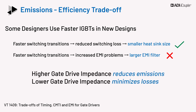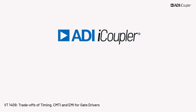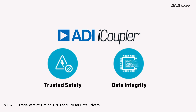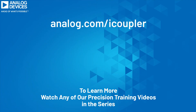Using higher gate drive impedance reduces emissions while slowing the device operation. On the other hand, lower gate drive impedance results in faster switching, which minimizes losses. Analog Devices has many digital isolators that provide trusted safety and data integrity. To learn more, please watch the next in our Precision Digital Isolation Video Training Series on the Fundamentals of Isolated Gate Drivers.